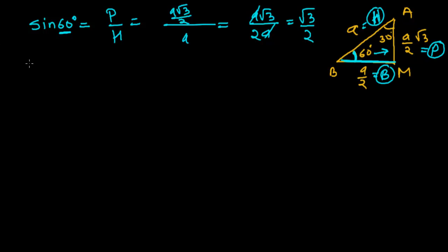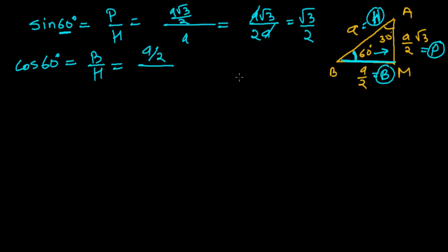Now let me do cos 60. Cos equals base upon hypotenuse. Base is A upon 2 and hypotenuse is A. So cos 60 = (A upon 2) upon A = A upon 2A. A cancels, giving 1 upon 2 as the value of cos 60.